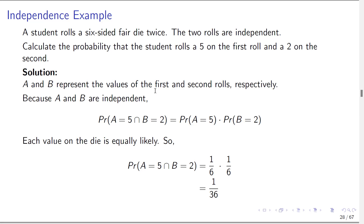Let A and B represent the first and second rolls respectively. Because A and B are independent, we want to find P(A=5 ∩ B=2). In probability theory, the word 'and' means intersection, and 'or' means union. Since A and B are independent, this equals P(A=5) · P(B=2). The probability of getting a five on the first roll is 1/6, and the probability of getting a two is also 1/6. Multiplying these gives 1/36.